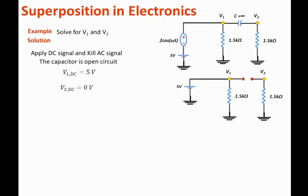We apply the DC signal, we set the AC signal equal to zero, it becomes short circuit, and we replace the capacitor by open circuit and analyze it. We start to see that the first resistor is in parallel with the 5 volts, the voltage across it will be 5 volts. And because the second resistor is open circuited, then the voltage across the second resistor is going to be zero volts.